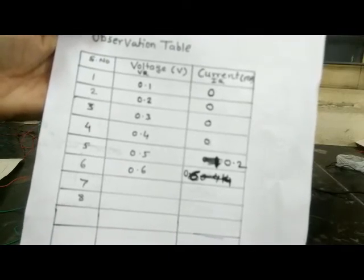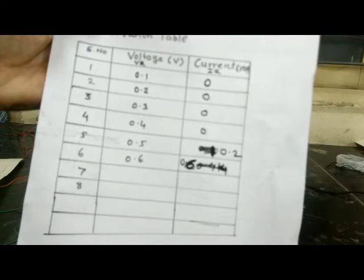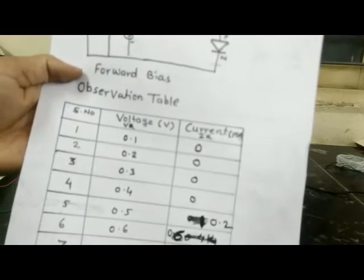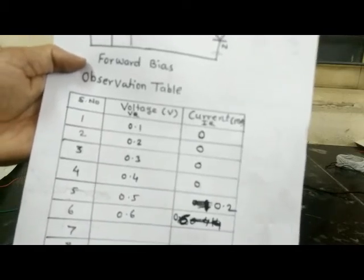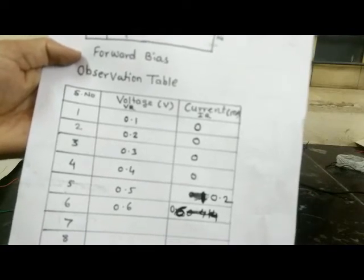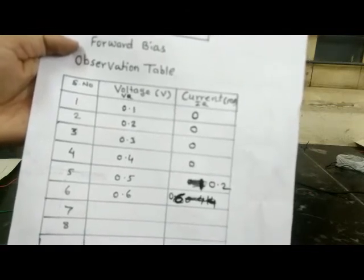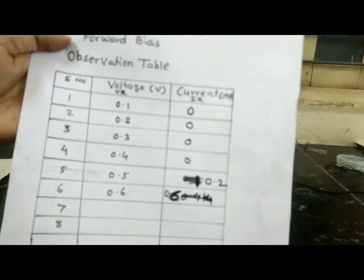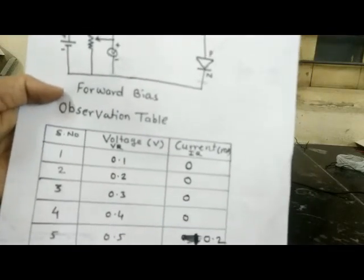See the diagram and observation table according to the current flowing in the circuit. For forward bias readings: at 0 volts, current is 0; at 0.1V, current is 0; at 0.2V, current is 0; at 0.3V, current is 0; at 0.4V, current is 0; at 0.5V, current increases up to 0.2mA; and at 0.6V, current increases up to 0.6mA. So in this way the voltage is constant steps but current varies in forward bias PN junction diode.